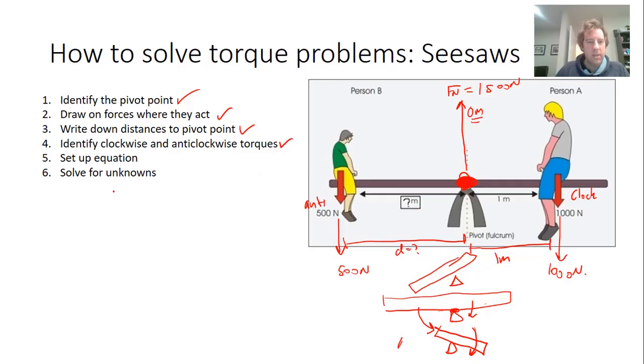And now I set up my equation. In the notes we found out that anti-clockwise torques are equal to or balanced out by clockwise torques. I know that a torque equals force times distance. So my anti-clockwise forces times their distances equals my clockwise forces times their distances.